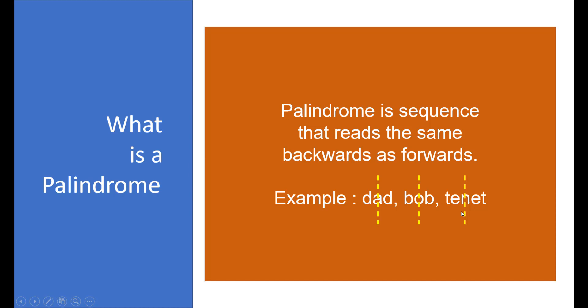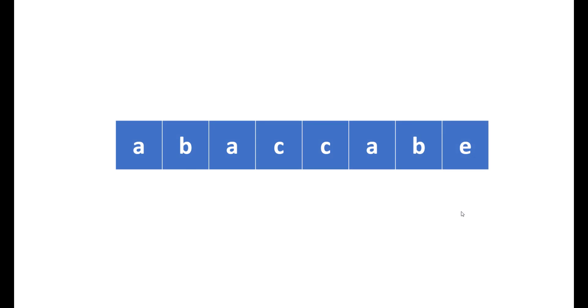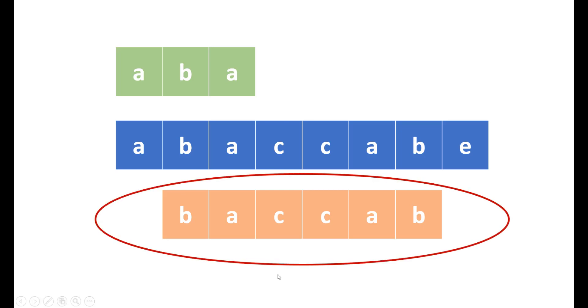So these are the center points from which if we expand in both directions, the characters that we get at those directions would be same in case when it is a palindrome. Now let's take this example. For this string, we can have these two palindromes and obviously the bigger one is this one, and so the output will be this string.